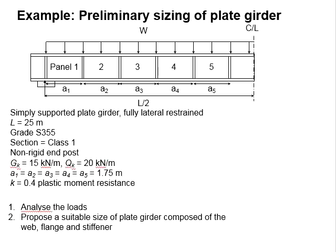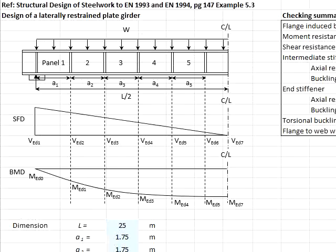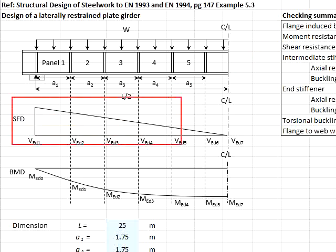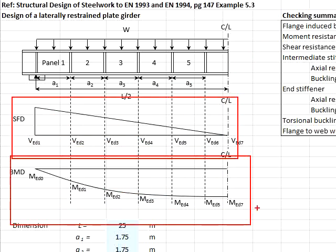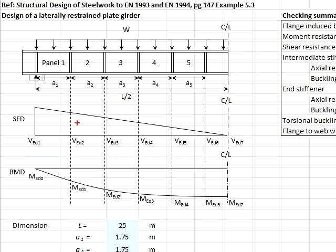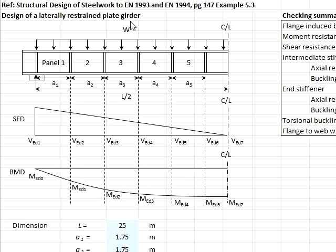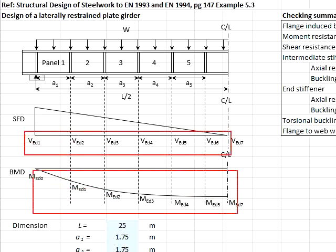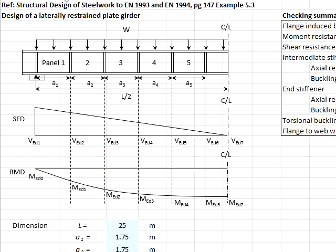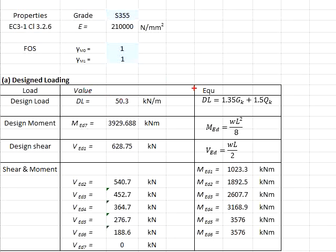To solve these questions, first we need to determine the shear force and bending moment diagram since we're going to need every single one of those in the following steps. The design load is calculated based on the ratio of 1.35Gk + 1.5Qk, which equals 50.3 kN/m.